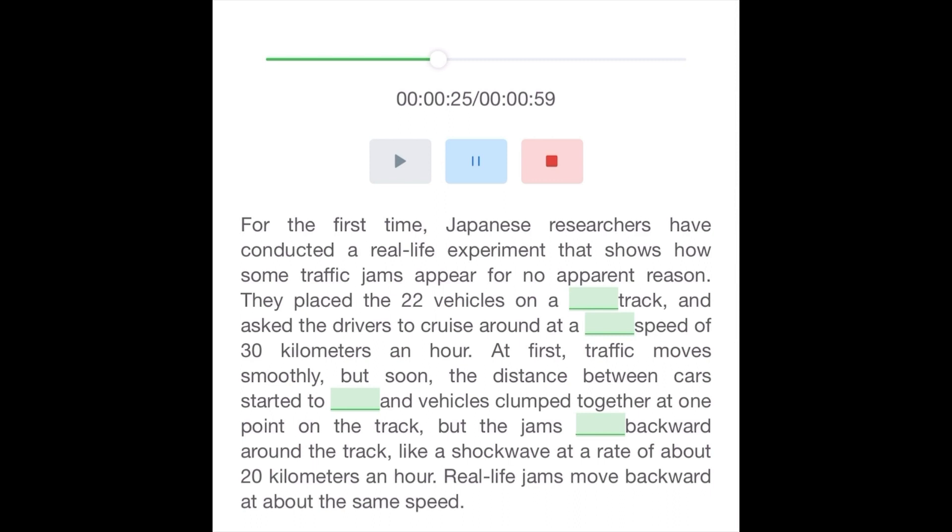At first, traffic moved smoothly, but soon the distance between cars started to vary, and vehicles clumped together at one point on the track. The jam spread backward around the track like a shockwave at a rate of about 20 kilometers an hour.